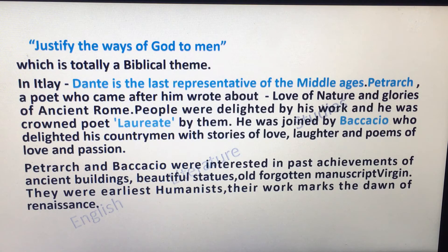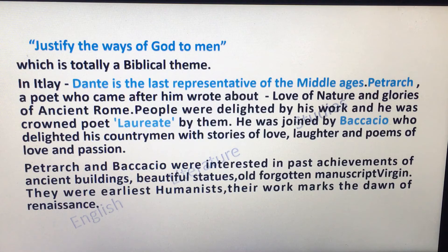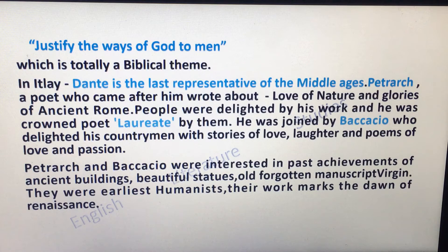Justifying the ways of God to men is a totally biblical theme. In Italy, Dante is the last representative of the Middle Ages. Petrarch, a poet who came after him, wrote about love of nature and the glories of ancient Rome. People were delighted by his work and he was crowned poet laureate. He was joined by Boccaccio, who delighted his countrymen with stories of love, laughter, and poems of love and passion. Petrarch and Boccaccio were interested in past achievements — ancient buildings, beautiful statues, old forgotten manuscripts. They were the earliest humanists, and their work marks the dawn of renaissance.